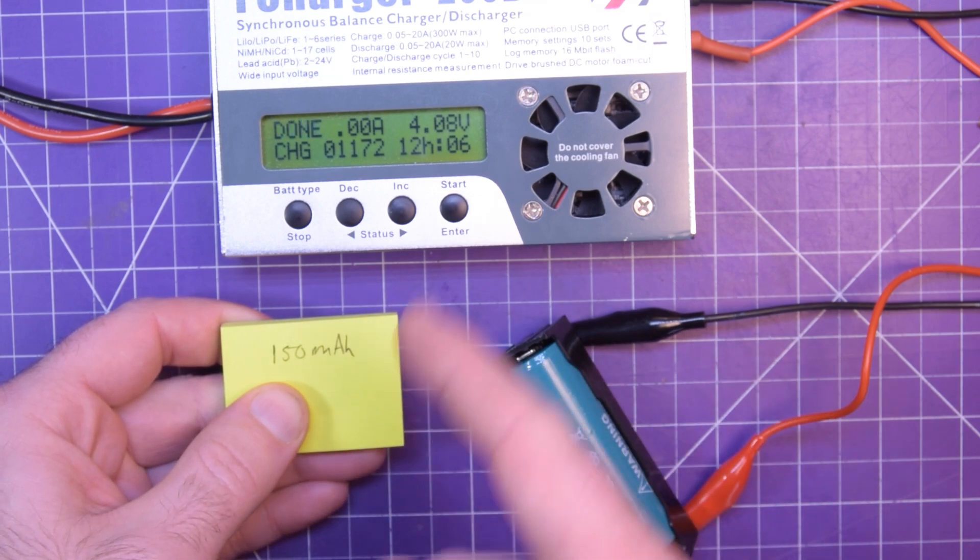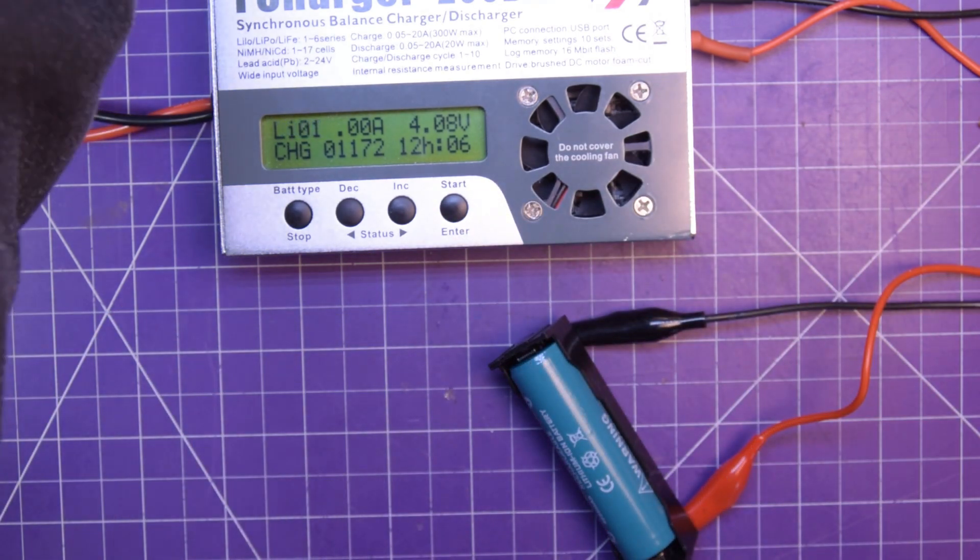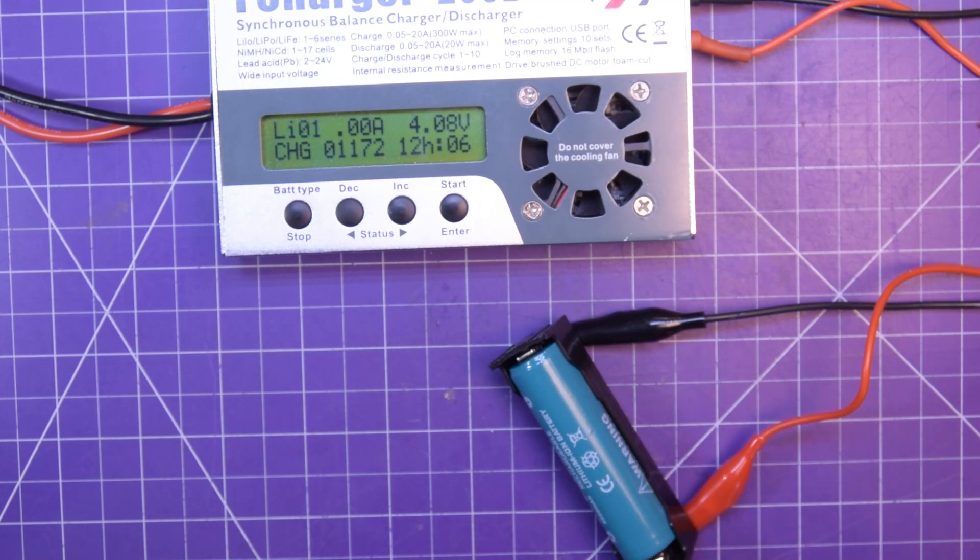So you're stuck charging these things for 13 hours at a time at around 100 milliamps. And this one here, even at a very slow rate to keep the cell cool and the internal resistance from bogging it down, it stayed really low.